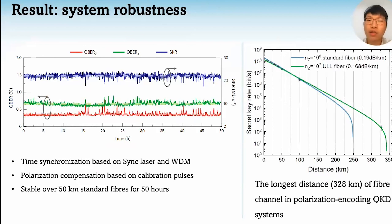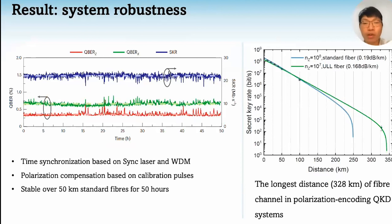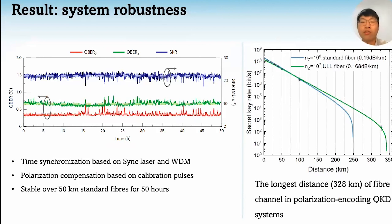As for the polarization feedback, we use strong calibration pulses which are prepared and sent periodically, and the corresponding QBER is used as a feedback signal, which is then transformed to control the electrical polarization controllers. This promises real-time alignment of the polarization to the original state. We test our system robustness over long runtime and long fiber channel. The results show that our QKD system can remain at low QBER over 50 hours continuous operation on the 50-kilometer standard fiber channel, and can generate positive keys over 328-kilometer fibers.